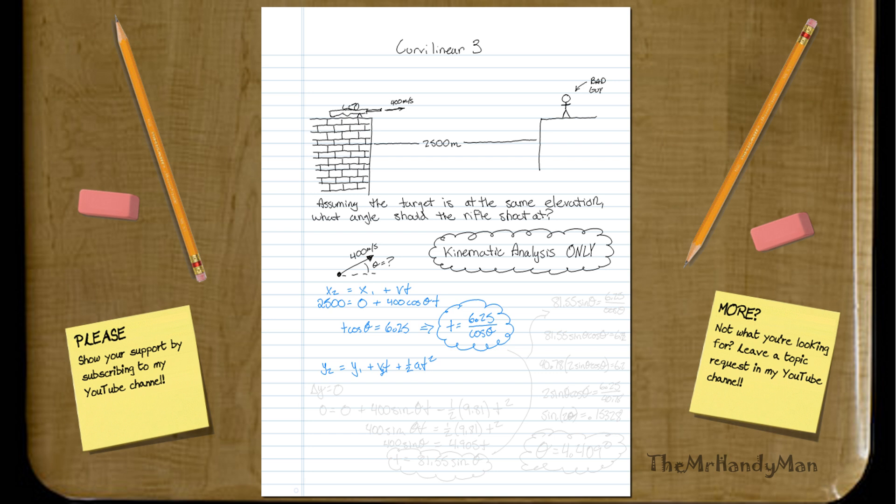So what we realize is that it's being shot at some arbitrary angle. Let's realize that delta y is going to equal 0, because they're at the same elevation.